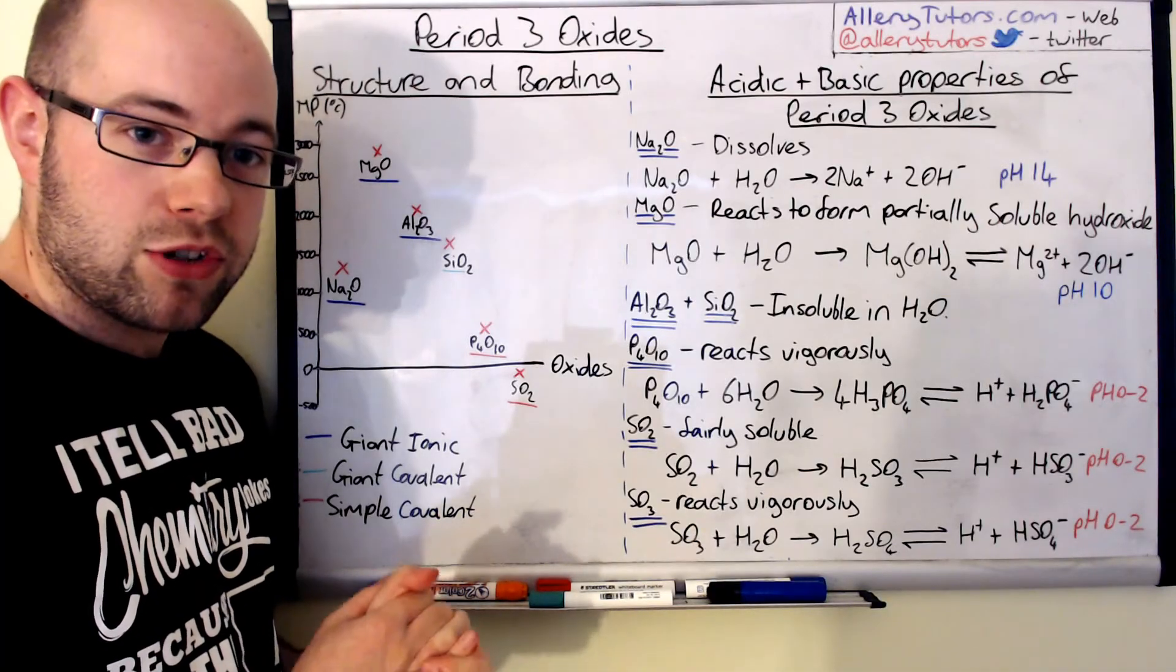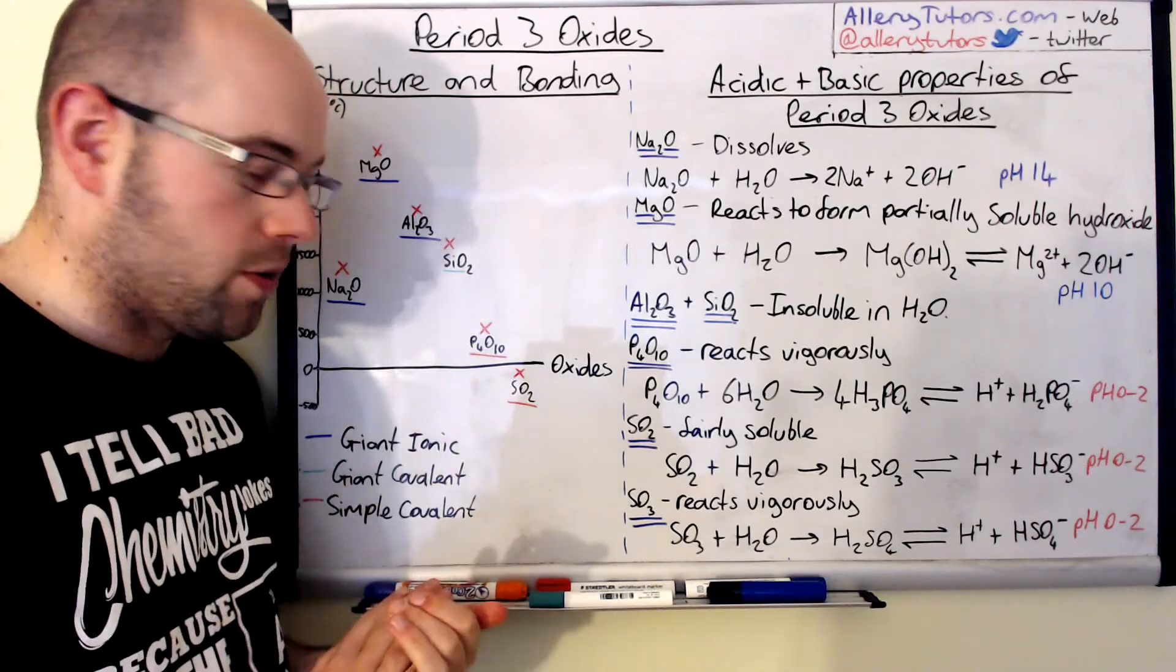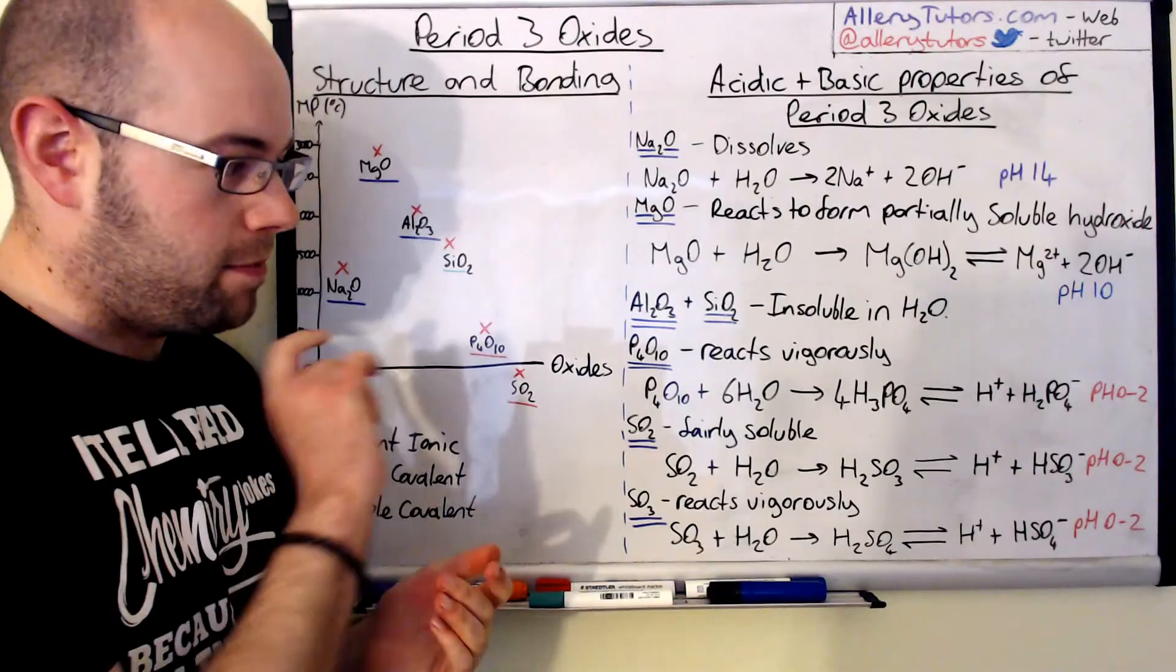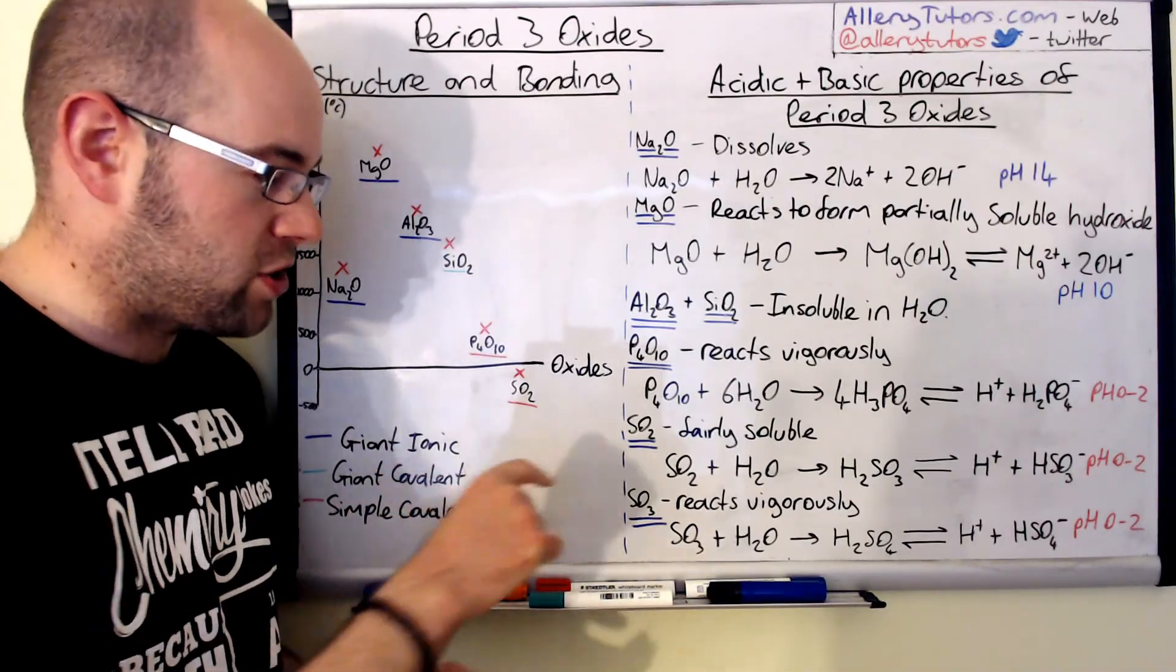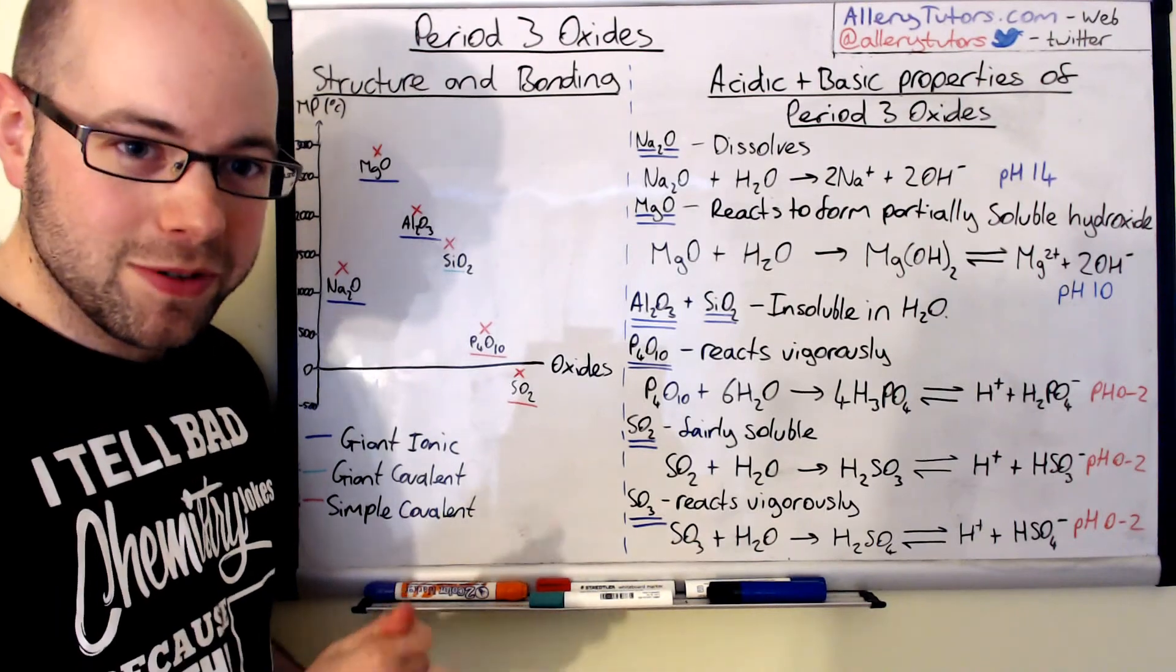But that's it. Make sure you can explain your reactions. Make sure you know which ones are covalent and ionic and describe the trends in terms of melting points. And make sure you remember your equations, especially the sulfur dioxide and sulfur trioxide. So that's it. Hope that helps. Bye.